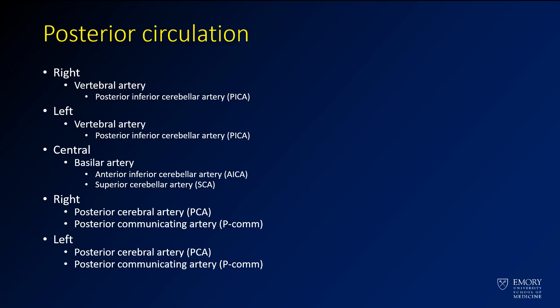Once you're finished looking at the anterior circulation, I move on to the posterior circulation. I have a similar pattern — I move from right to left. I'll start by looking at the right vertebral artery and take a look at the PICA as it comes off. Then I'll go back down and look at the left vertebral artery and its PICA as well. I'll look at the midline structures, mainly the basilar artery, with its two main branches — the AICA and the SCA. Then at the basilar bifurcation, I'll look at both posterior cerebral arteries and look for a posterior communicating artery, first on the right then on the left.